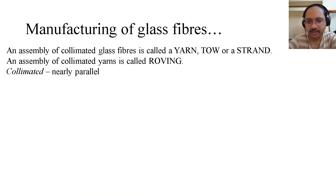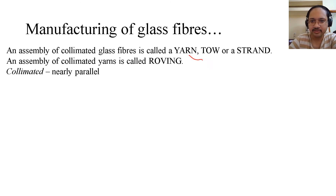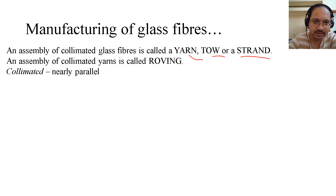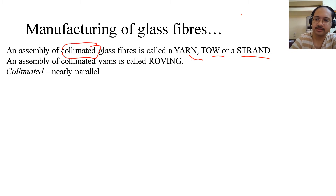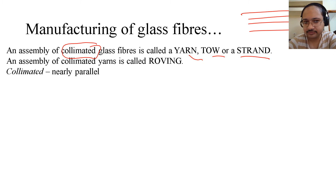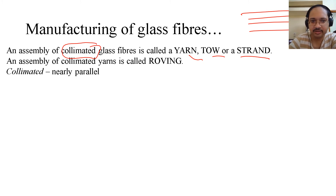An assembly of collimated glass fibers is called a yarn, tow, or strand. 'Collimated' simply means they are accurately parallel. An assembly of collimated yarns is called a roving.